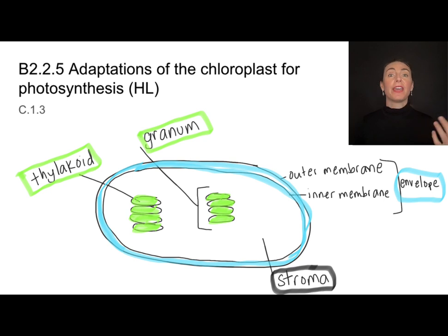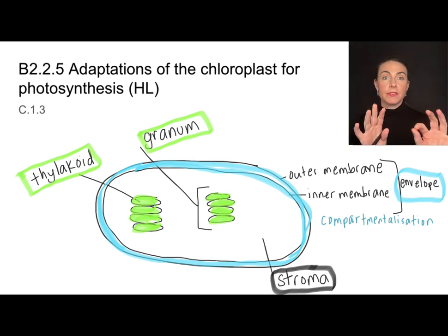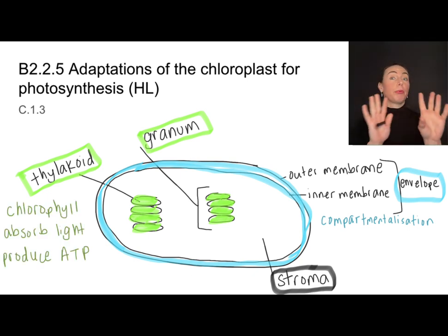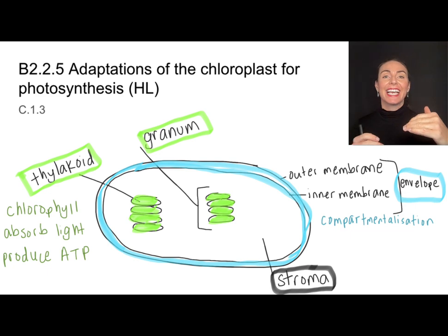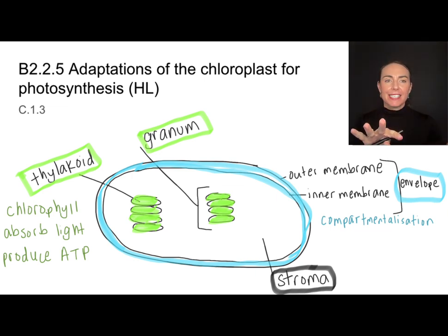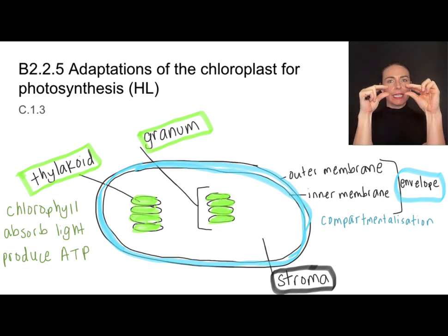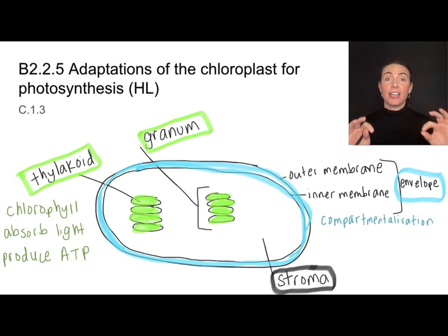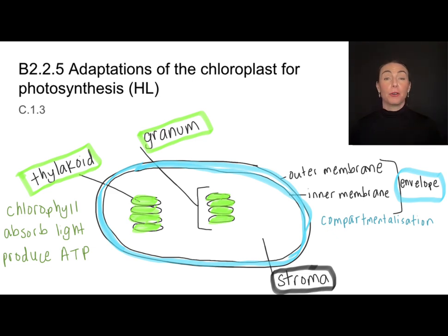Now let's talk about how these structures function during photosynthesis. The envelope separates the chloroplast from the rest of the cell, providing compartmentalization. The role of the thylakoids is to store the chlorophyll, which absorbs the light. Inside those thylakoids there's a small fluid-filled space — and that is a good spot for ATP production, just like the intermembrane space in mitochondria, because it's a small space in which you can accumulate a proton gradient, a high concentration.